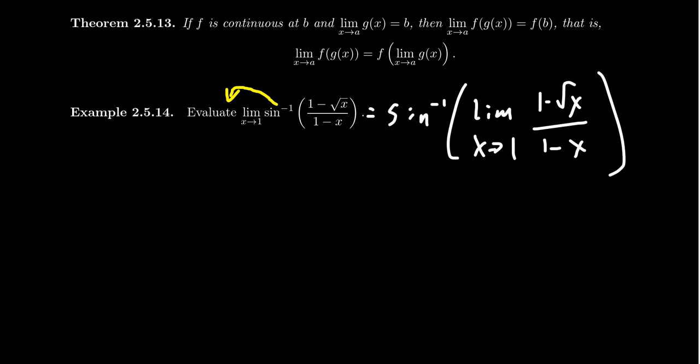But we still have the problem that if we try to plug in x equals one, we're going to get zero over zero. So what I want to do is rationalize the numerator. We have one minus square root of x there, so we're going to multiply the numerator by one plus the square root of x, and we have to do the same thing to the denominator so that the proportion is preserved.